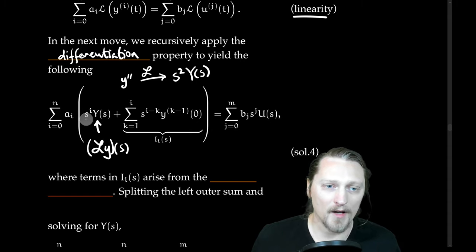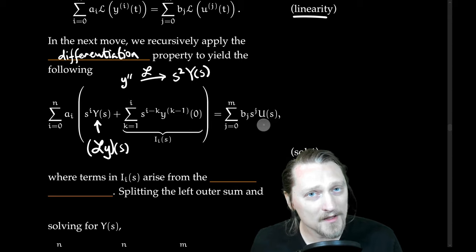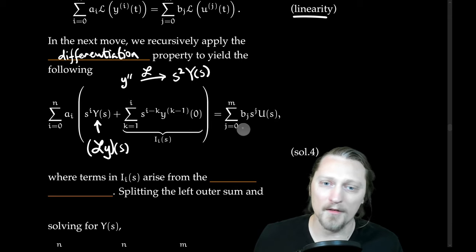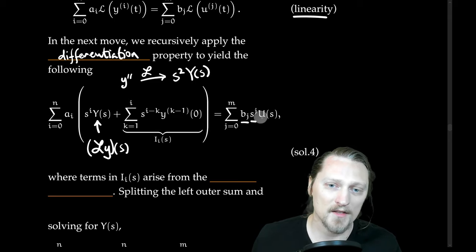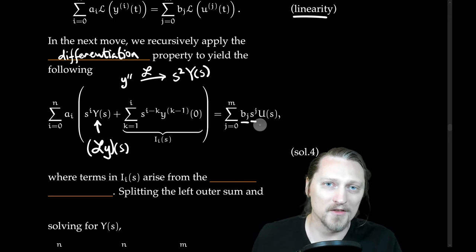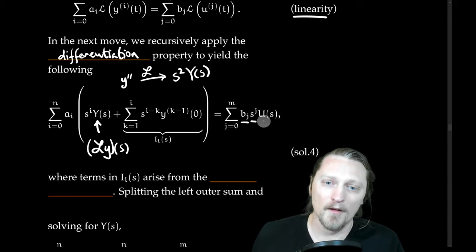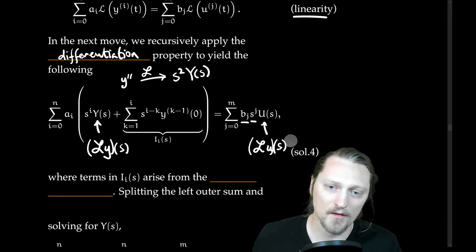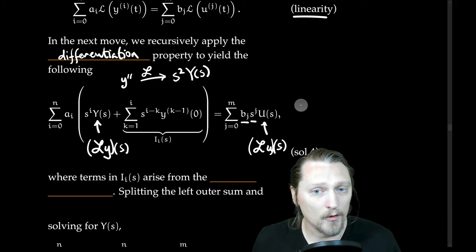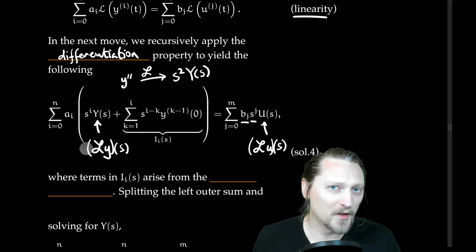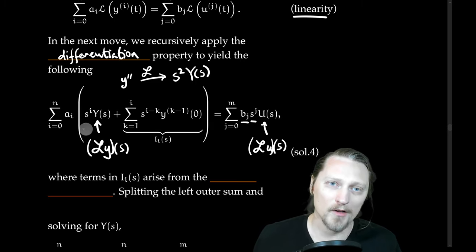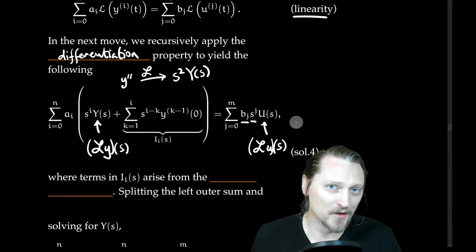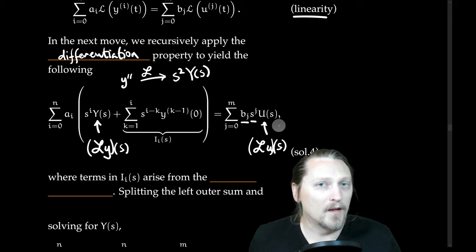On the left-hand side we have this sum plus the other term we'll look at in a moment. On the right-hand side, we have something very similar: a sum of the coefficients times s raised to the j-th power, corresponding to the order of the derivative, of U(s) — the Laplace transform of the input function. The image of the transform is a function of s. So we have a nice polynomial in s and Y on the left, and a nice polynomial in s with U, the input transform, on the right.